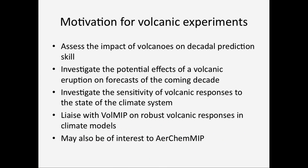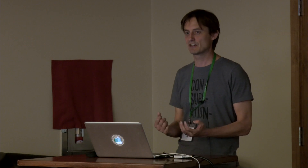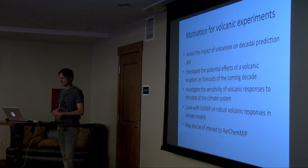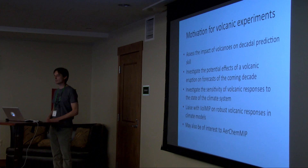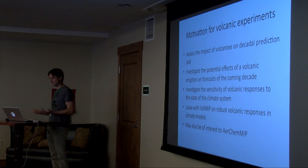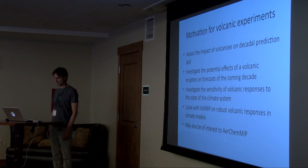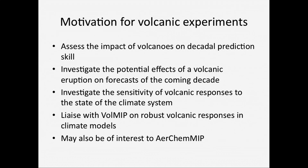For the decadal prediction community, one key motivation is understanding the impact of volcanoes on decadal prediction timescales. Another is investigating the potential effects of a volcanic eruption on our forecasts — if the volcano goes off while we're running a forecast, how do we adjust? There are also mechanistic questions: how sensitive is the volcanic impact to the background state, the time of year, and different climate indices?